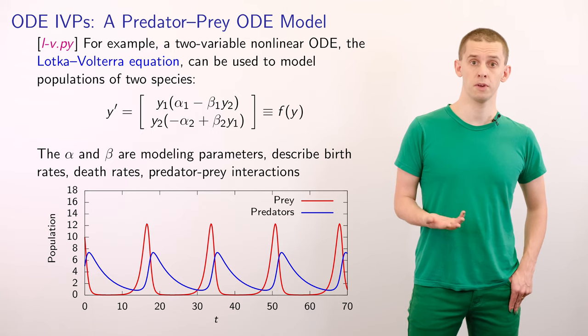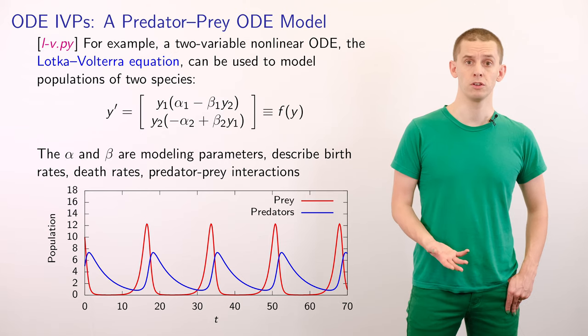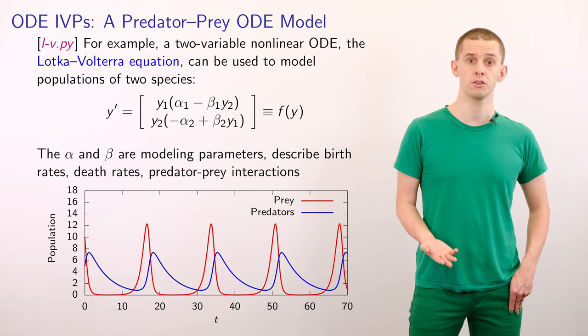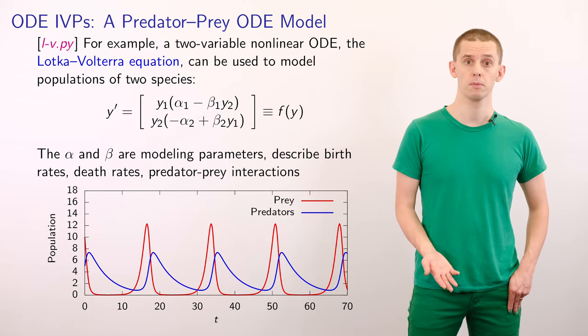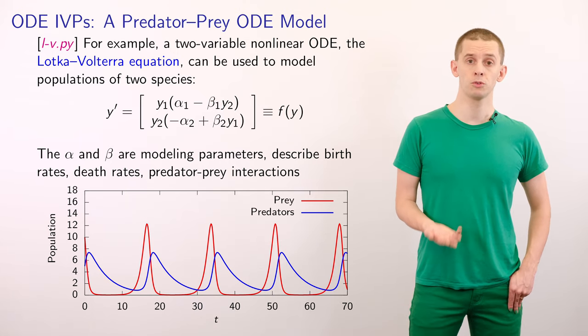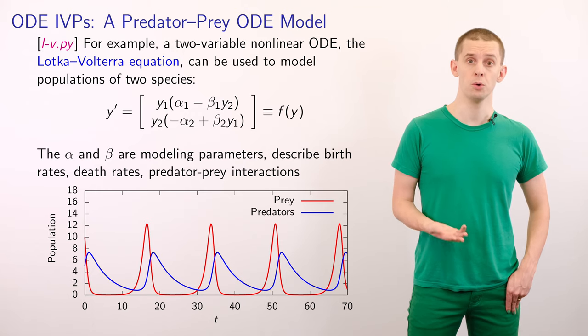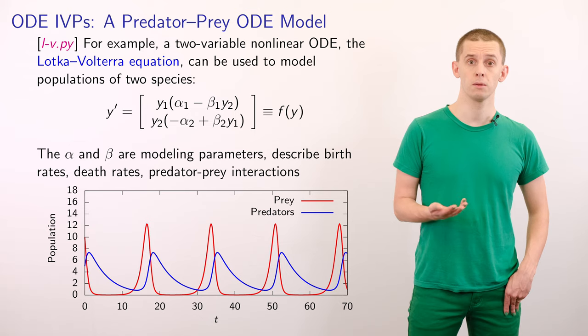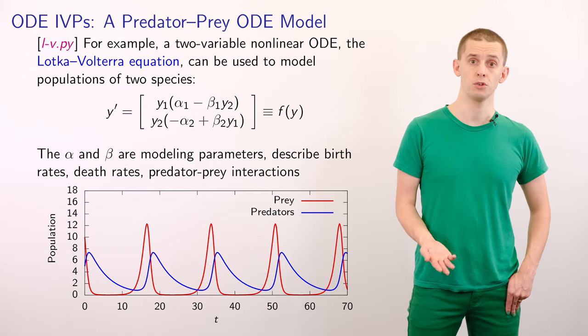And in the absence of any prey, the predators will exponentially decay. And that's given by a term minus alpha2 times y2.